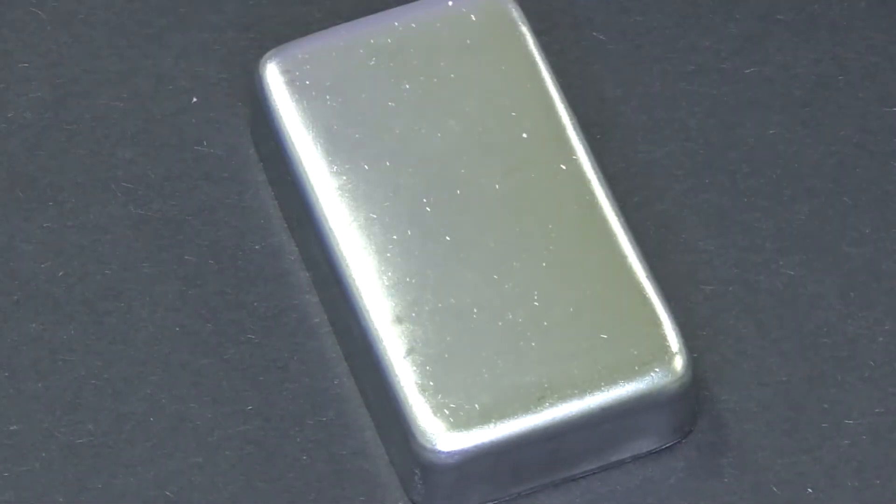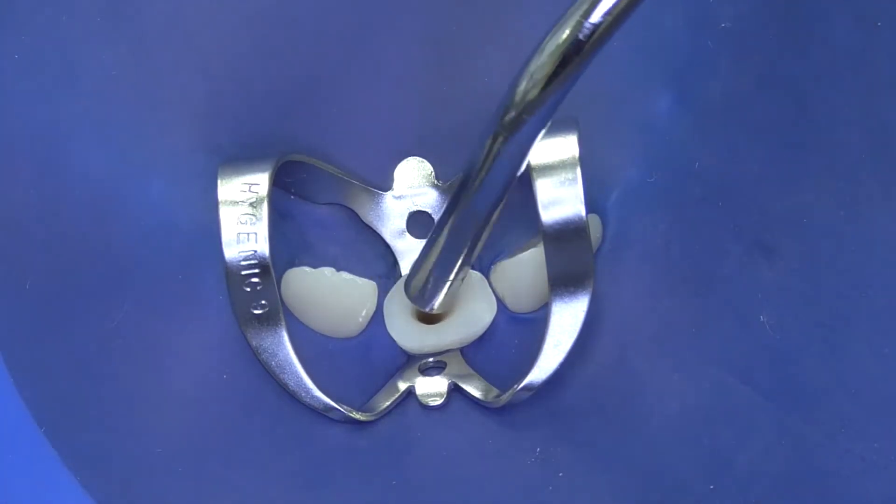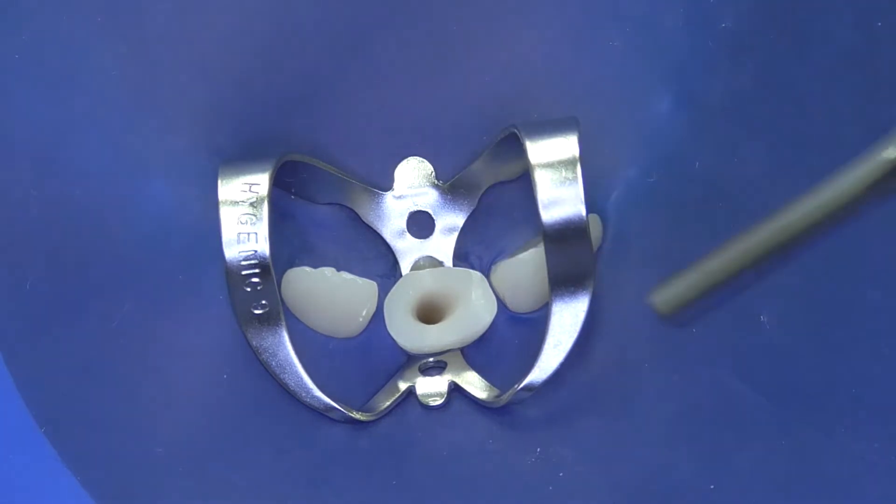After cleaning the dentin, after drying it with air and paper points, we are starting preparation of the bonding of the root canal.